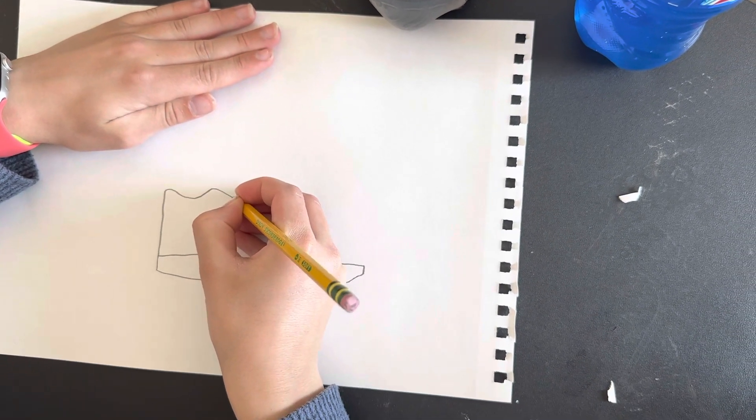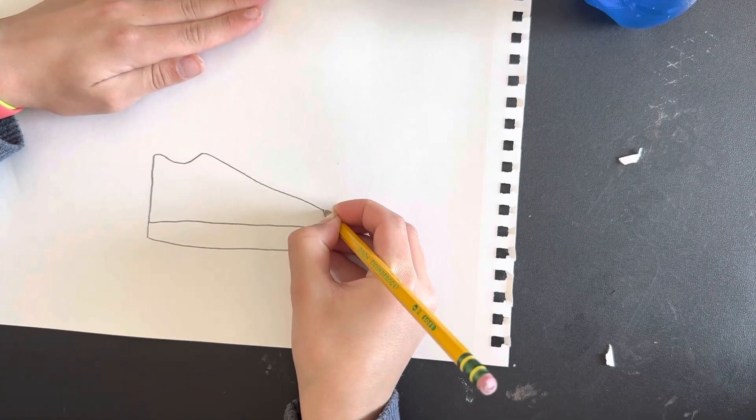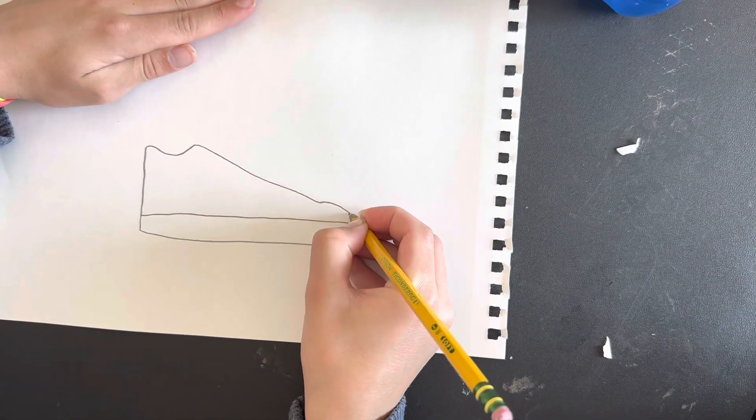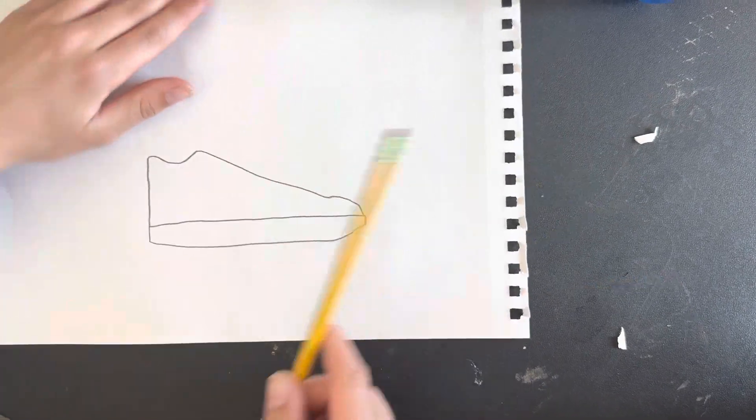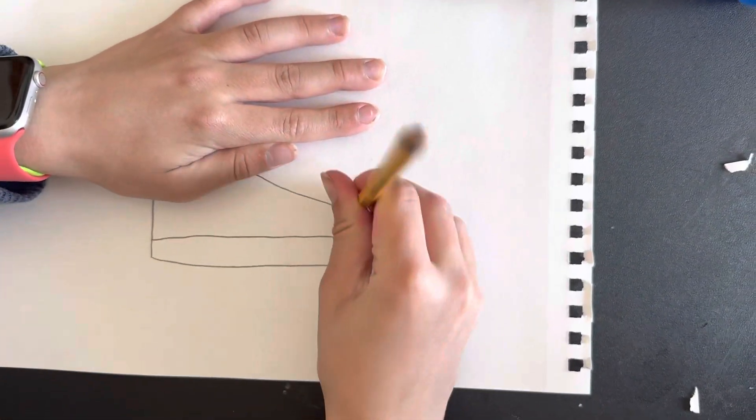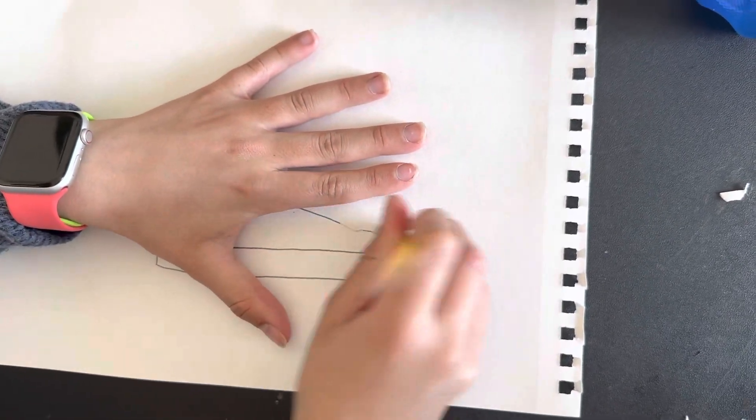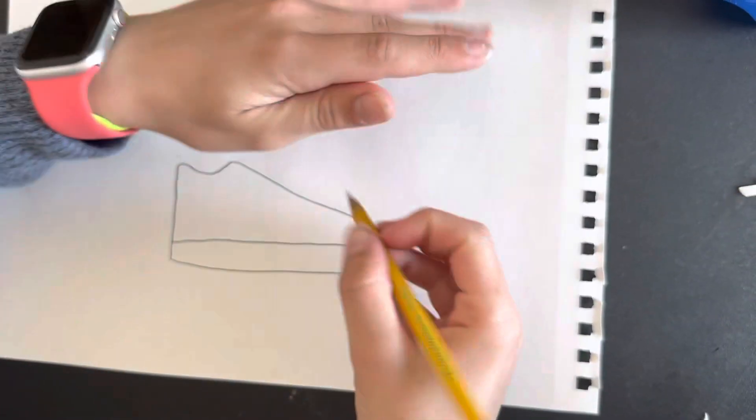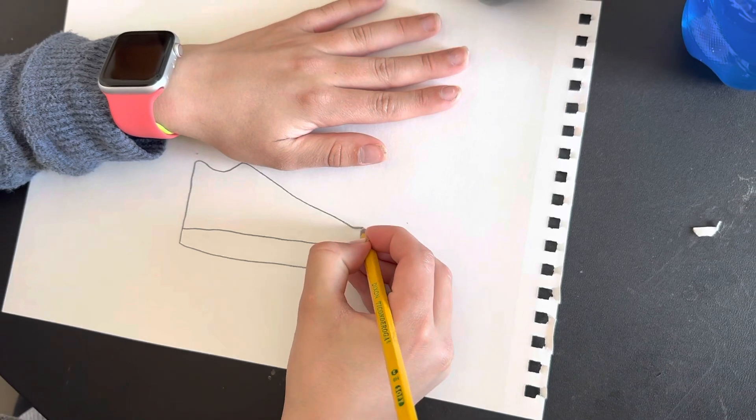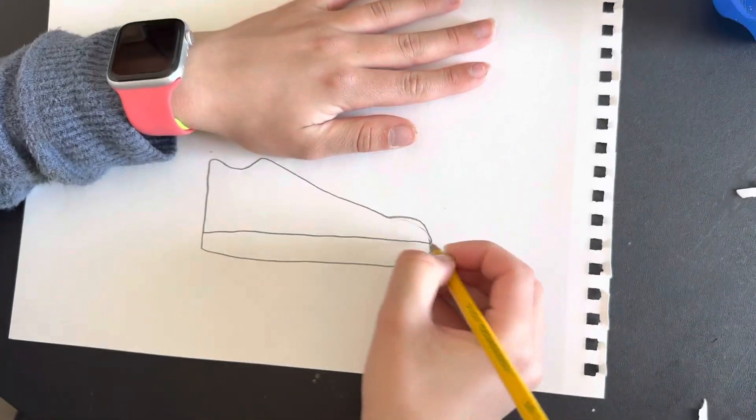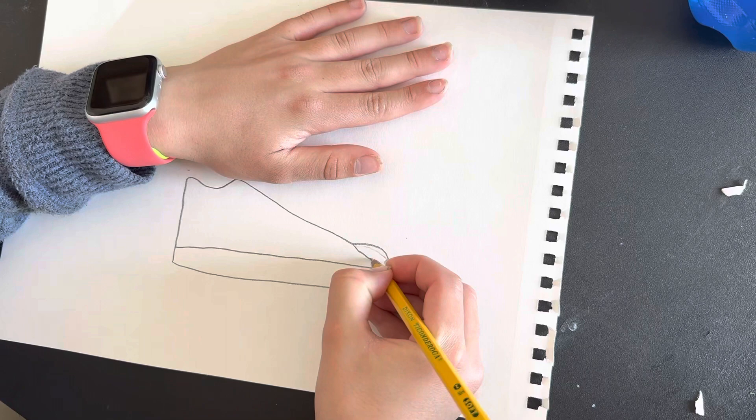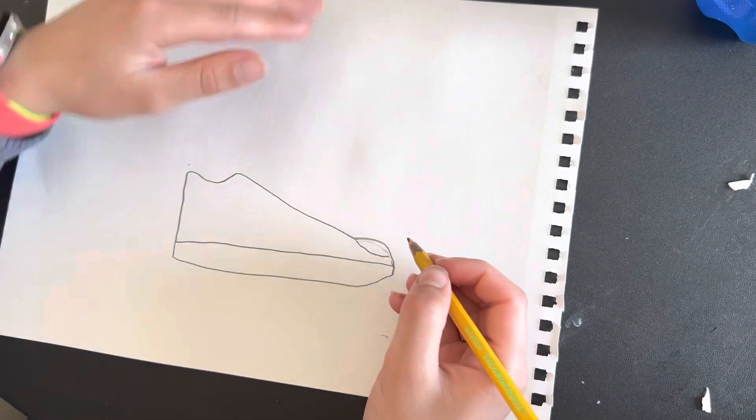Then you go down and create the curve for the toe box. It wasn't big enough, so I gotta erase a little bit. It's too big of a toe box, too small. So you gotta go down then draw the toe box. Since I'm already over there, I'll just draw that right now.